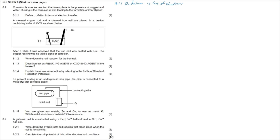A cleaned copper rod and a cleaned iron nail are placed in a beaker containing water at 25 degrees Celsius. After a while, it is observed that the iron nail was coated with rust, while the copper rod showed no visible signs of corrosion.